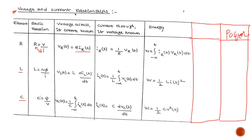The energy for the resistor: energy is power multiplied by time. Power is V×I, so energy = V×I×t. Substituting V = IR, we get energy = I²Rt. So the resistor dissipates energy in the form of heat. This gives us the complete energy equation for the resistor.